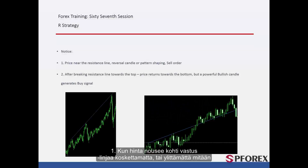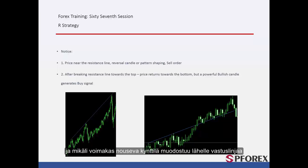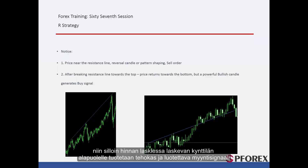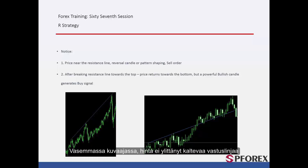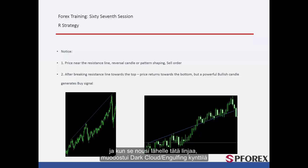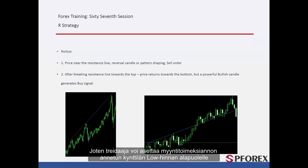When price rises towards the resistance line without touching or crossing anything, if a powerful bearish candle forms near the resistance line, then a powerful and reliable sell signal is generated after price goes lower than the bearish candle. On the left graph, price could not cross the gradient resistance line, and after it went up near this line, a dark cloud or engulfing candle formed. Thus, a trader could place a sell order below the low price of the given candle.